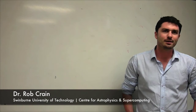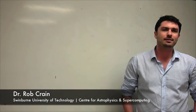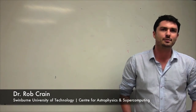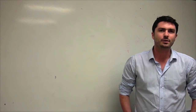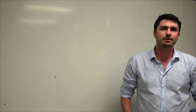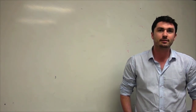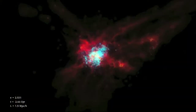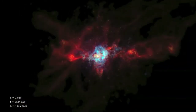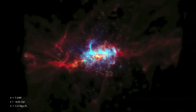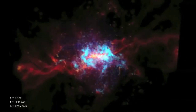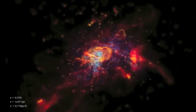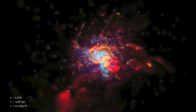I'm Rob Crane. I'm a postdoc at the Centre for Astrophysics and Supercomputing at Swinburne University in Melbourne, and I work generally in the field of numerical simulations of galaxy formation. My recent work has largely focused on looking at the X-ray properties of galaxies in these simulations and also the X-ray constraints that we get from telescopes such as XMM-Newton and the Chandra Observatory.